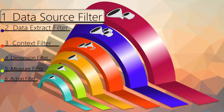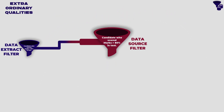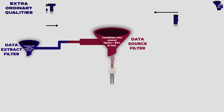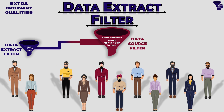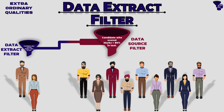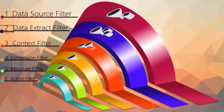After candidates are chosen from the entrance exam, those whose marks are above 95 percent and who have extraordinary intelligence are separated out from the others. The data of these candidates is kept at a different place and they are given special practice to become covert agents. This method of filtering — where some data is kept at local storage and worked on separately — is similar to the data extract filter of Tableau.